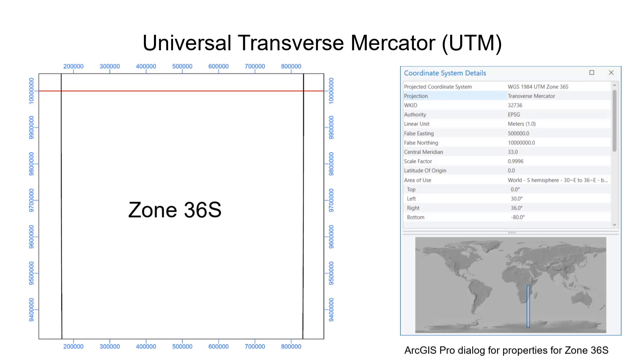The central meridian is a specific line of longitude that runs through the centre of the zone. The zone is 3 degrees wide either side of the central meridian.